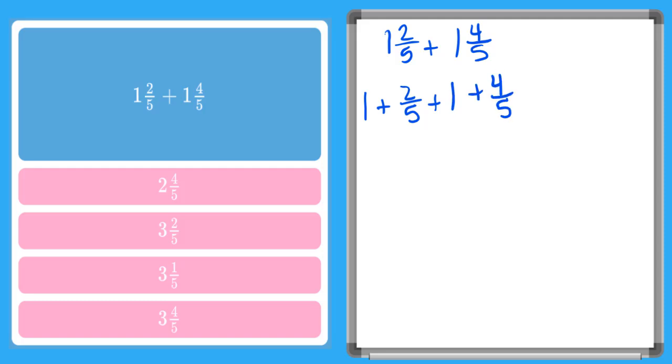And now if I want to rearrange this, I can say 1 plus 1 plus my fractions. And let's see, we can combine some steps here. I see that these have the same denominator. So I can go ahead and I'm going to add my whole numbers. 1 plus 1 gives me 2.